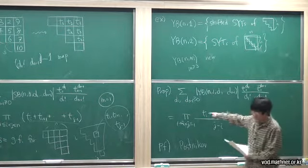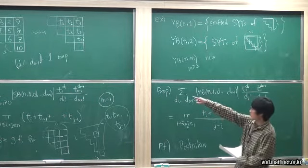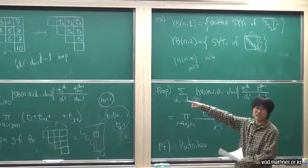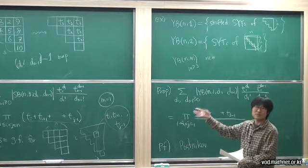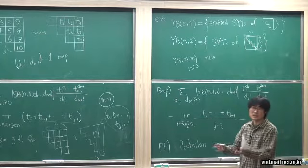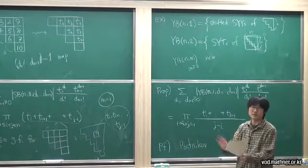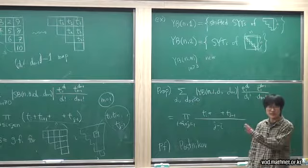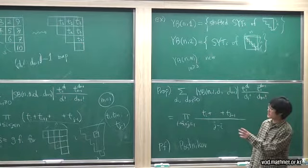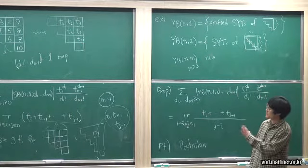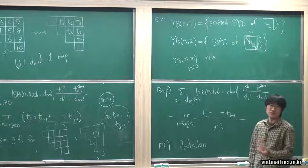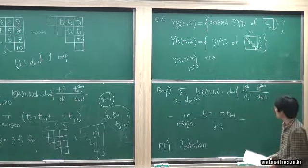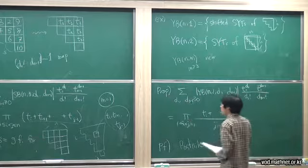We have these two propositions, and together they imply the theorem for m equals 1. For general m, we handle it page by page. The essential part is the m equals 1 case — once that is done, the general case follows easily. So the theorem is proved.